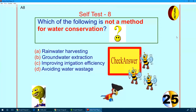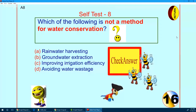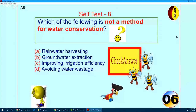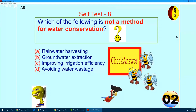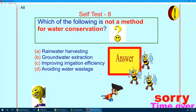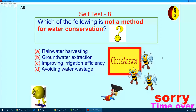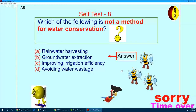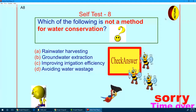You are not able to see the question on your screen. You can go for A, B, C, or D. Time's up — the right answer is groundwater extraction. Extraction cannot be a method of conservation. We will go to the next question.